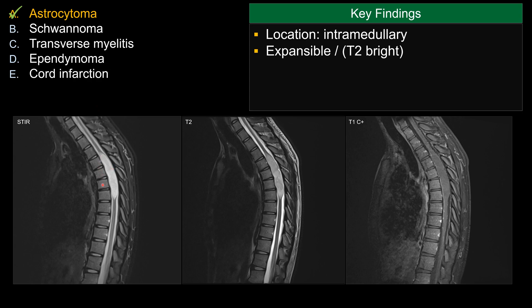This lesion is very expansile, so very much a mass-like lesion. In this particular case, you see no enhancement at all, which is actually quite uncommon for either astrocytoma or ependymoma. So this is a good case that in reality, sometimes a lesion does not follow the textbook description.